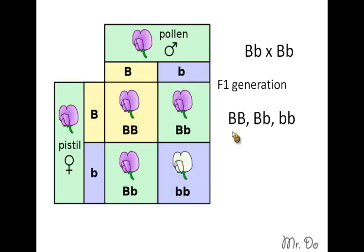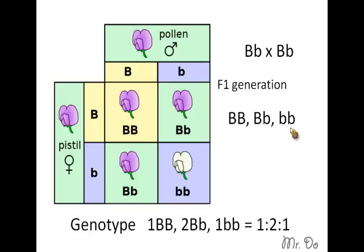So your result, you have big B big B, and small one and a small one and a small one. The genotype, the genetic letters, the alleles are, you would have one BB, you have two of the Bb, and you have one of the bb. The ratio for the genotype is one to two to one.